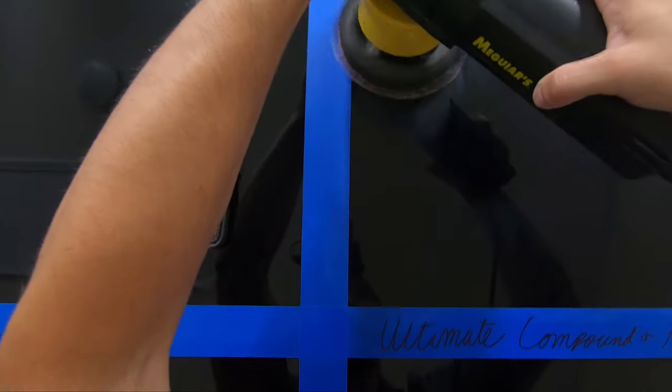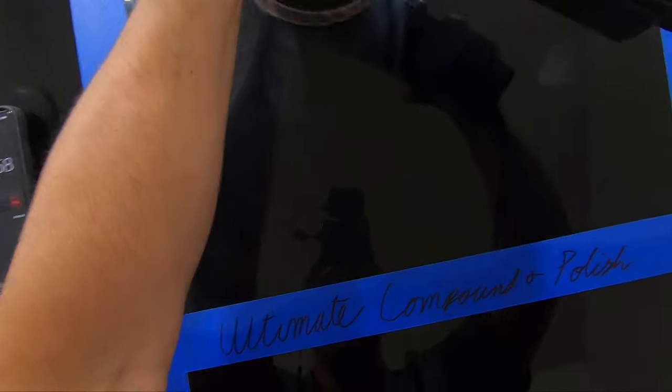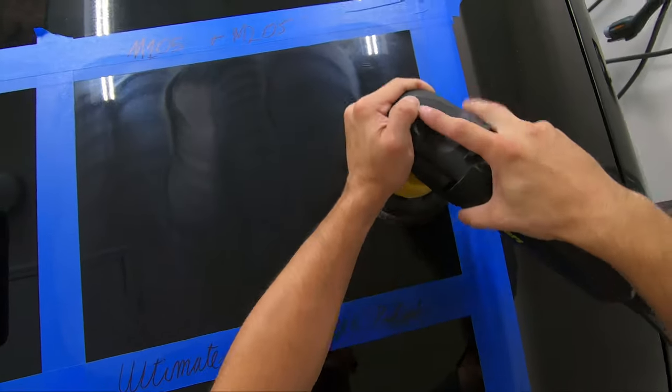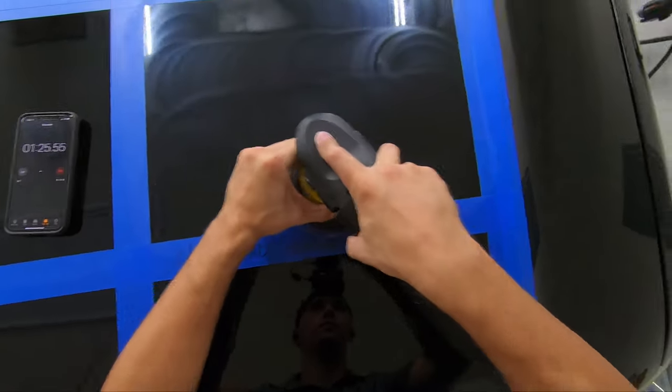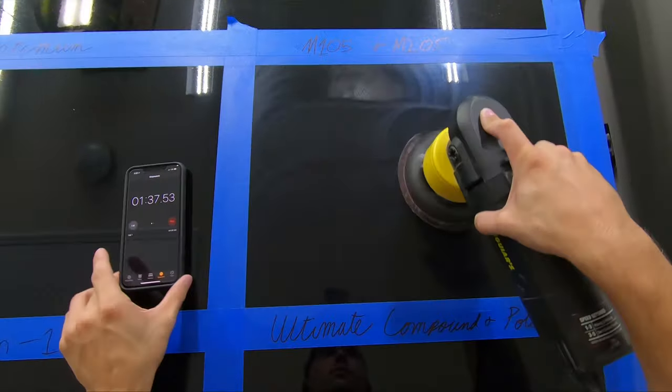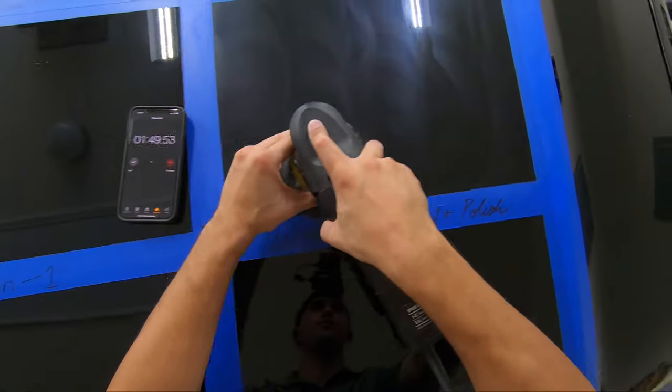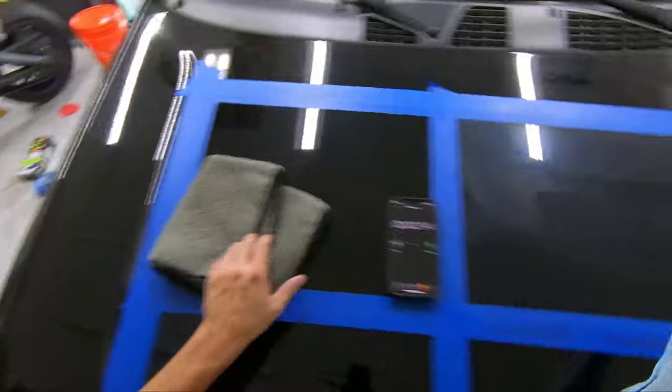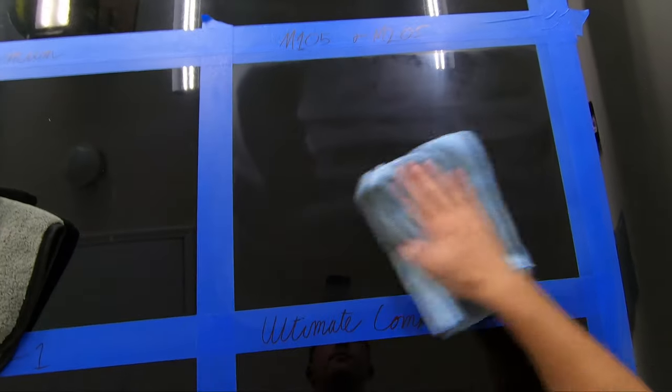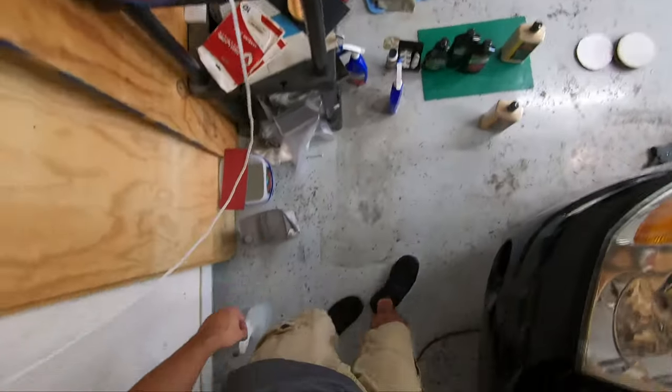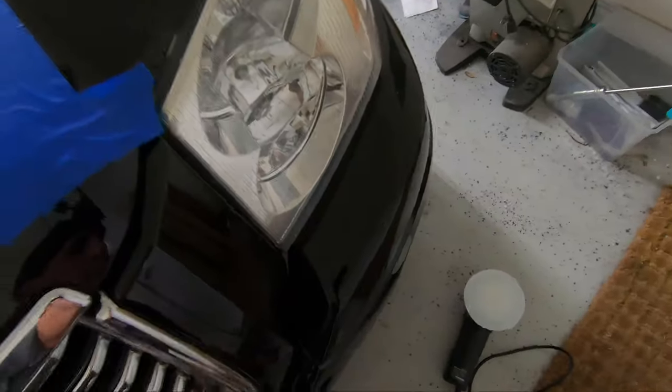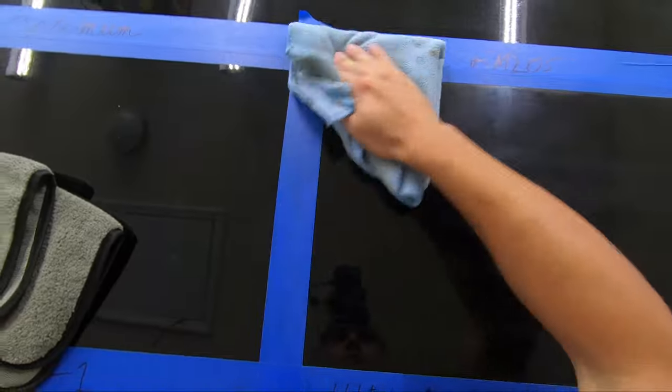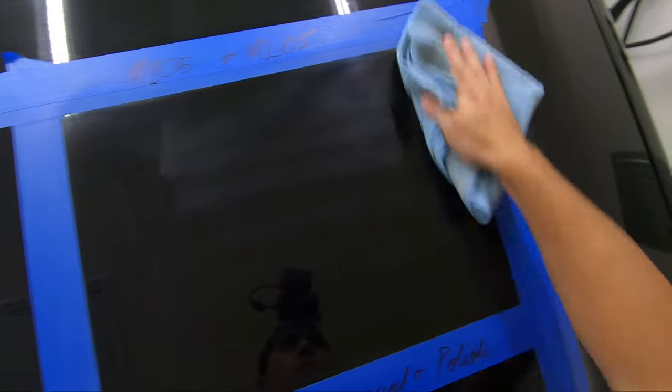I removed all that I could and moved on to M205, as that will remove the excess product for us. We can still see that M105 did an excellent job of removing the scratches, swirls, and water spots. We just have to deal with the dried product, which is something you tend to have to deal with M105.